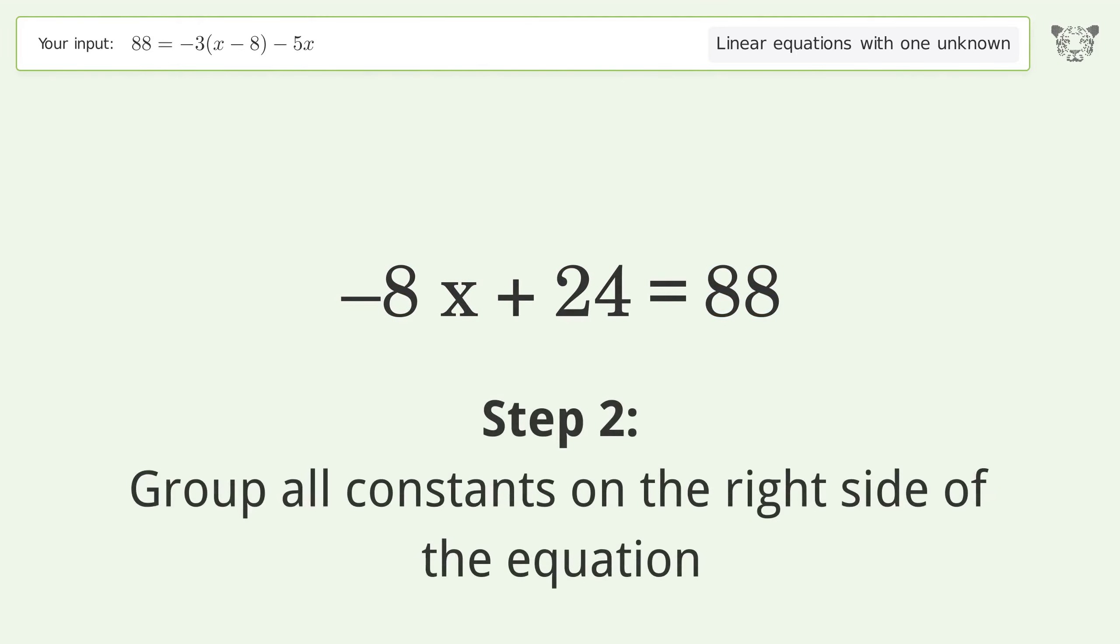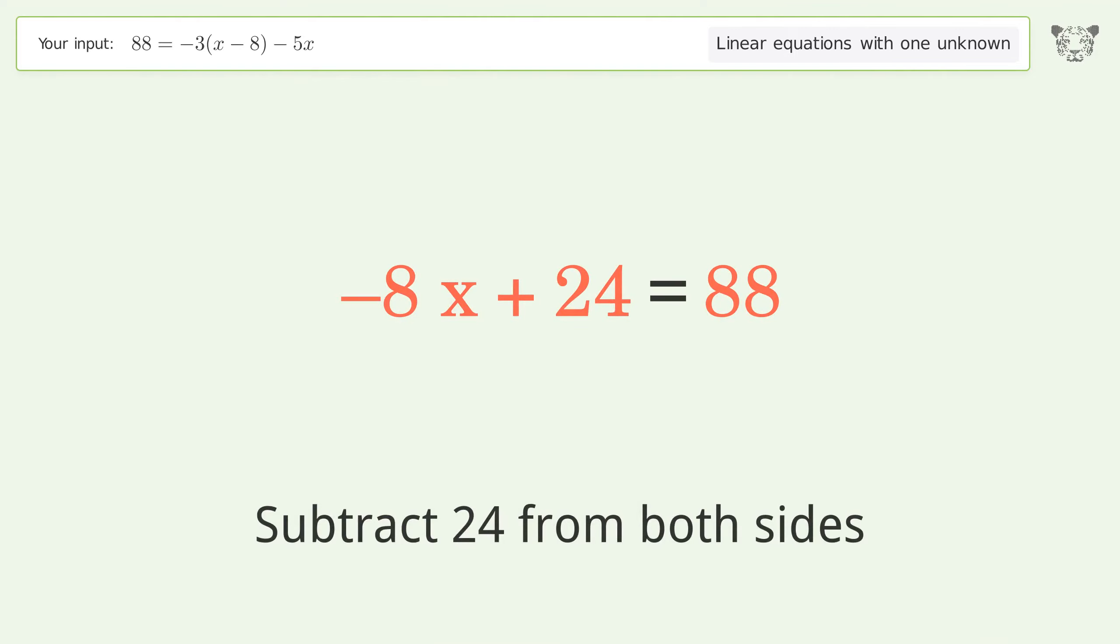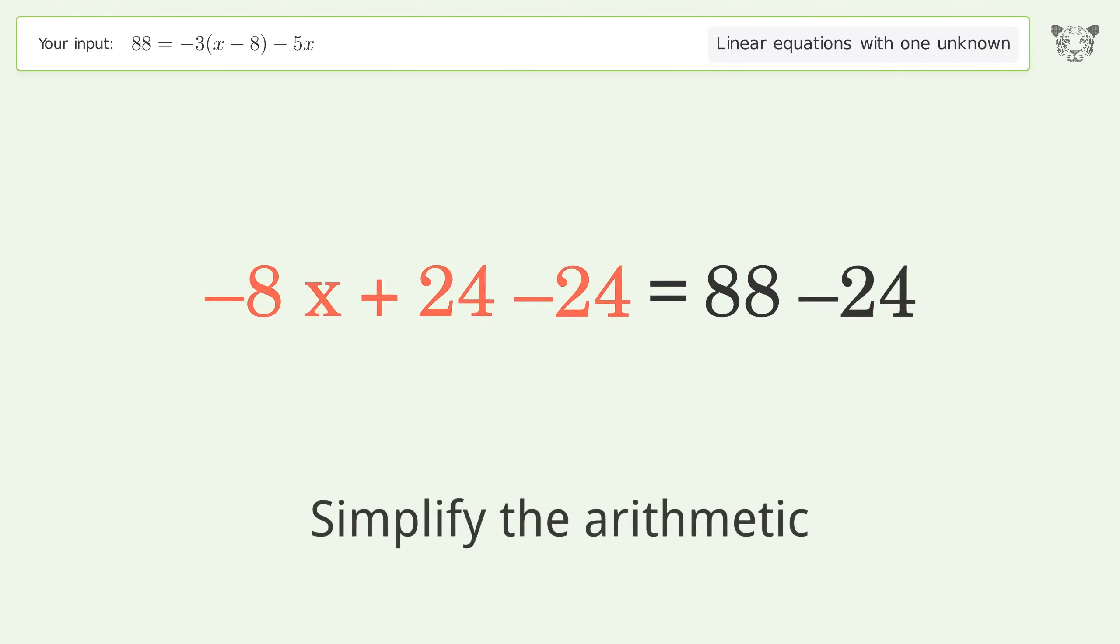Group all constants on the right side of the equation. Subtract 24 from both sides. Simplify the arithmetic.